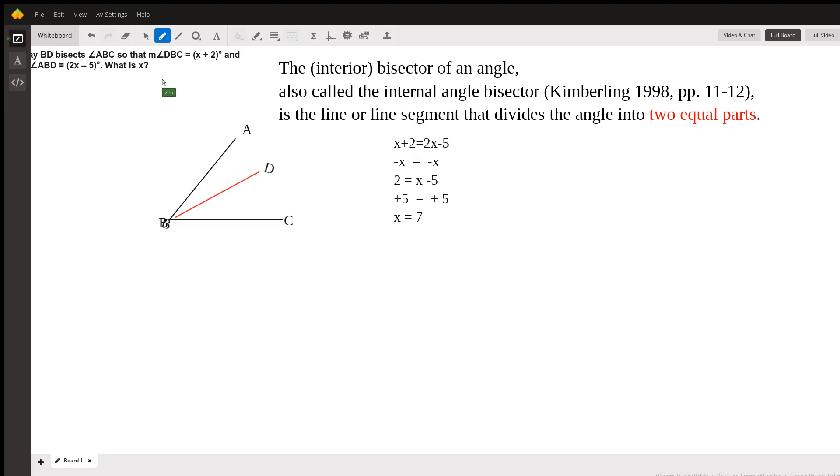So that means DBC is now equal to the angle ABD. They are now equal angles because by definition of a bisector.